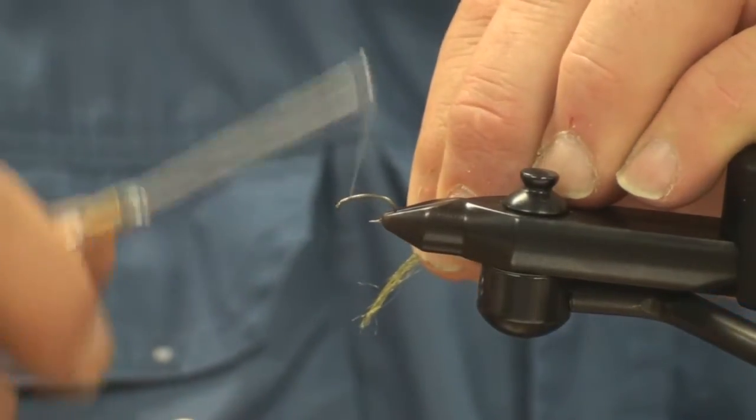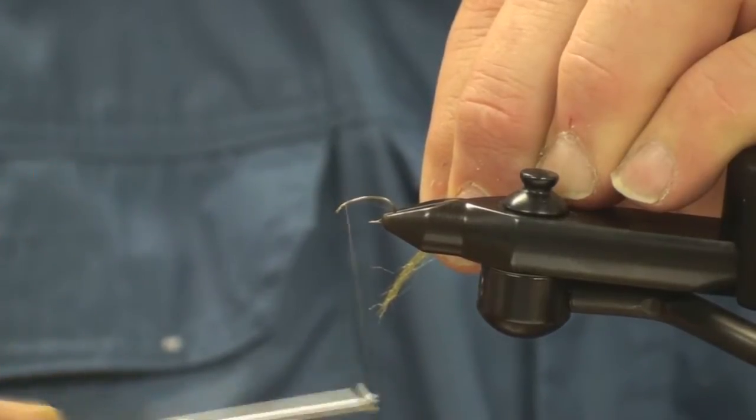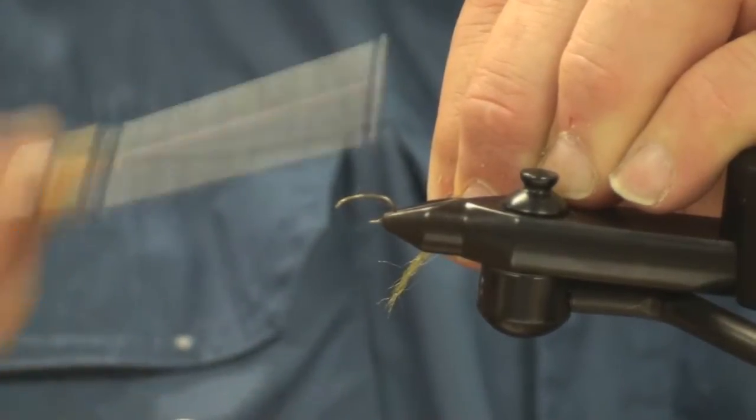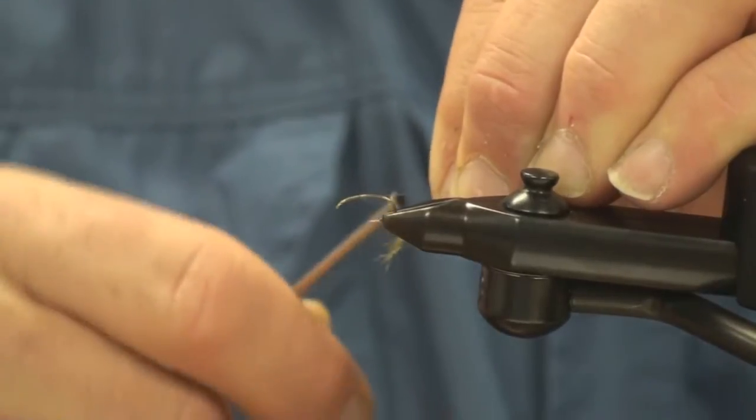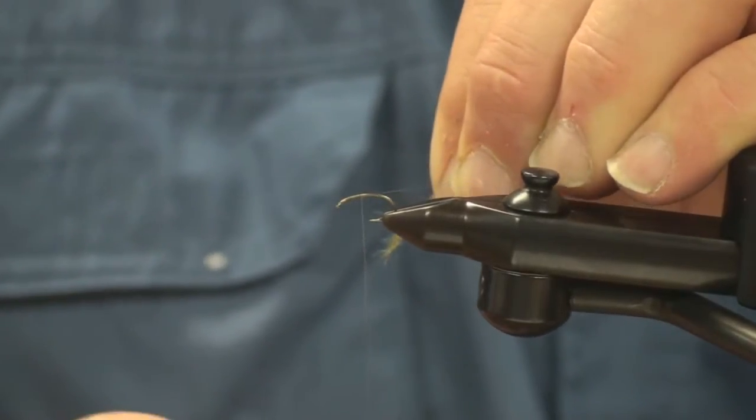I'm going to start my thread about an eye width behind the hook eye and stop it right here, just a little bit in front of the point of the hook.